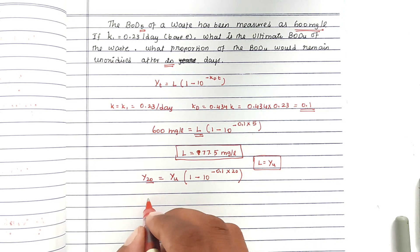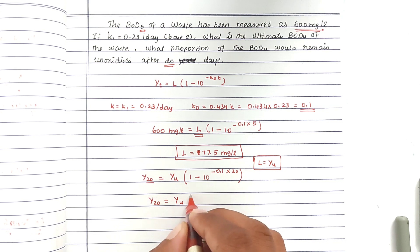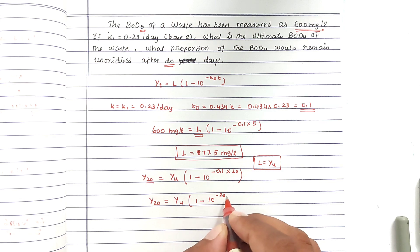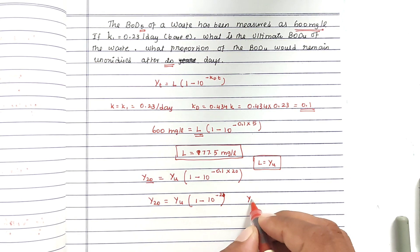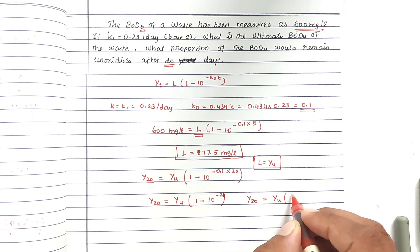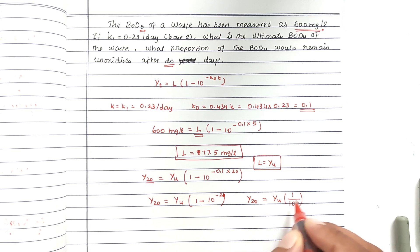We can take Y20 = YU. We can rewrite the equation: Y20 = YU × (1/10²). Solving this, Y20 = 0.99 YU.